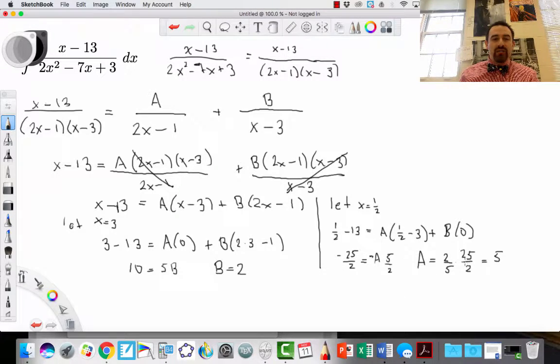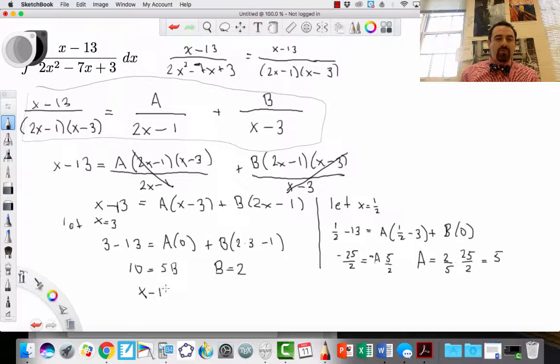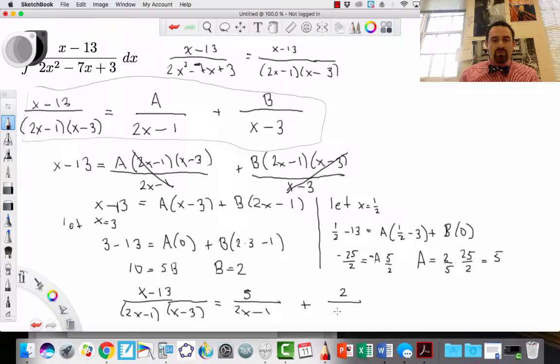What that means is that A is equal to 5 and B is equal to 2. So I can go back up to this statement right here, way at the top, and I can substitute. That means that x minus 13 divided by 2x minus 1 times x minus 3 is equal to—so A is equal to 5—5 over 2x minus 1 plus 2 over x minus 3. And if you were to do this simplification backwards, if you were to find a common denominator, you would find that's equal to that. So basically, the method of partial fractions is a way to decompose a fraction that already has a common denominator into two distinct fractions.